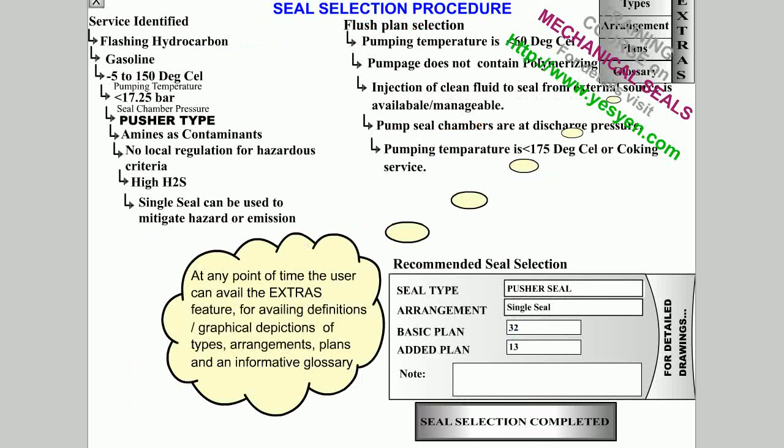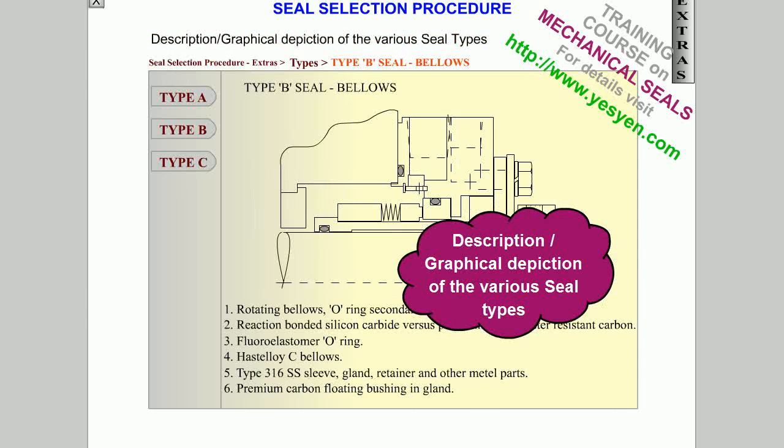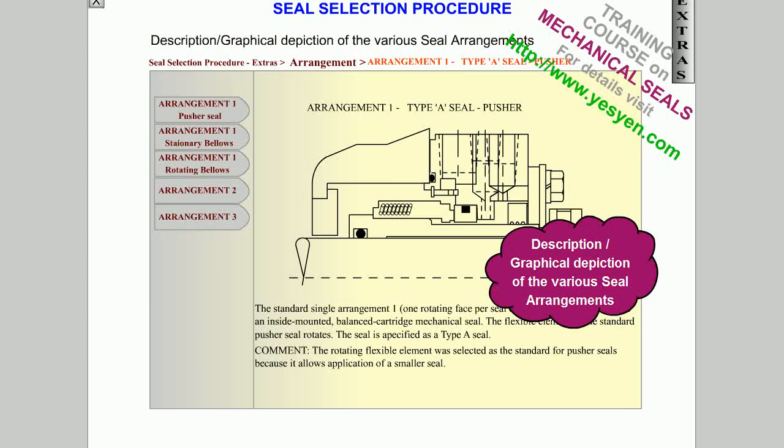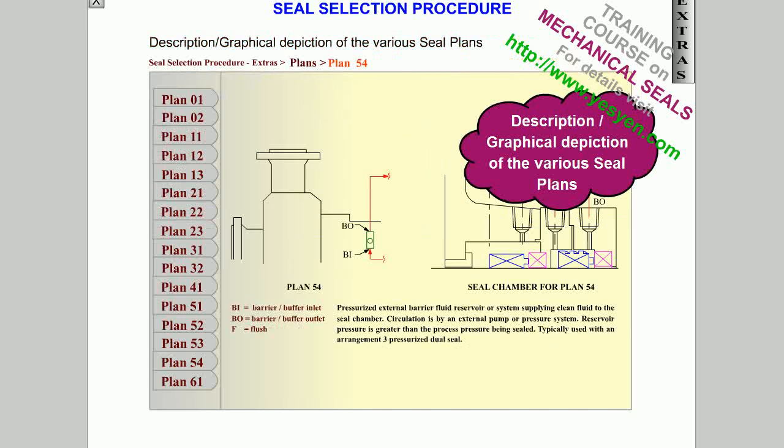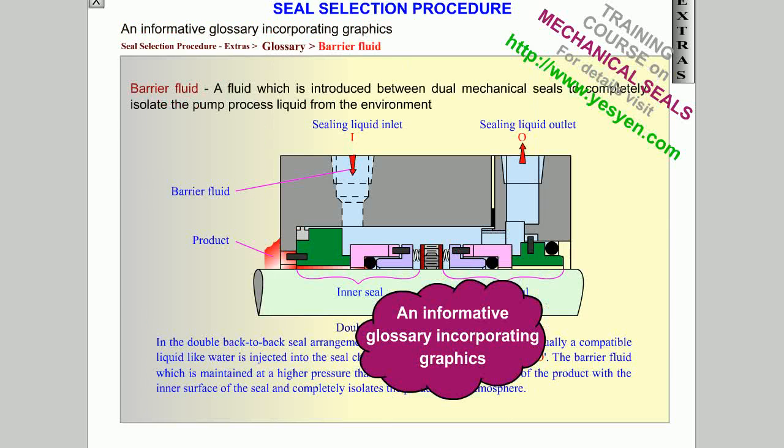At any point of time, the user can avail the extras feature for availing definitions and graphical depictions of types, arrangements, plans, and an informative glossary. Description and graphical depiction of the various seal types, seal arrangements, seal plans, and an informative glossary incorporating graphics.